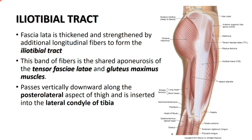The iliotibial tract is the main modification of the fascia lata. It is a thickening of the fascia lata on the lateral aspect of the thigh, where some longitudinal fibers strengthen the fascia lata on its lateral aspect, forming the iliotibial tract.